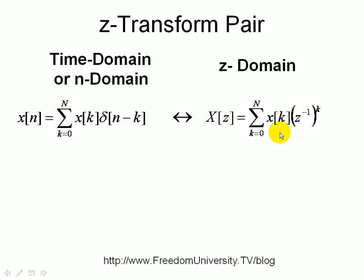Let's look at some examples. Say we have a single impulse delayed by n₀. Using this definition and substituting it in, we get X[z] = z^-n₀.